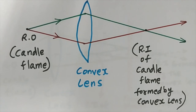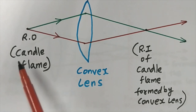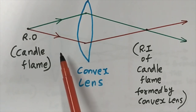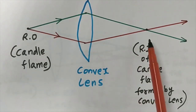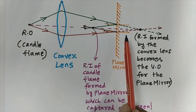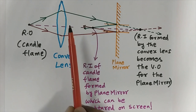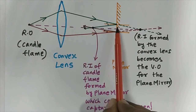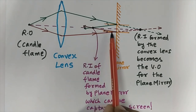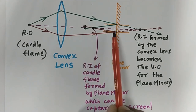The candle flame was the real object emitting diverging light rays. The convex lens made those light rays converge to form a real image. But before they could converge, I placed a plane mirror in front of that real image location. The light rays hit the plane mirror and follow the law of reflection — the angle of incidence equals the angle of reflection — and as a result they now converge after hitting the mirror instead of diverging as before.